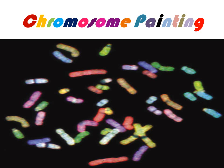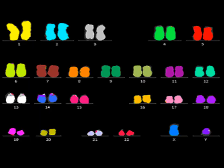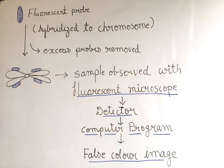This method of spectral karyotyping is a variation of fluorescent in-situ hybridization (FISH), which makes use of probes specific for sites scattered along the length of each chromosome. These probes are labelled with several different fluorescent dyes with distinct excitation and emission wavelengths. After the probes are hybridized to chromosomes and the excess removed, the sample is observed with a fluorescent microscope in which a detector determines the fraction of each dye present at each fluorescent position in the field. This information is conveyed to a computer and a specific program assigns a false colour image to each type of chromosome.